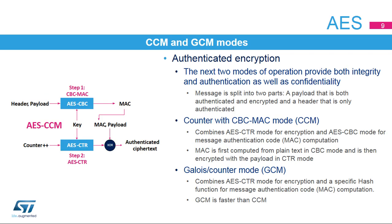Two modes of operation add authentication and integrity to confidentiality. The authentication mechanism is applied on both the payload message that will be encrypted, and also on additional data that requires only authentication. This last part is called the header. The first mode is the counter with CBC message authentication code, or CCM. This mode combines a first pass of AES CBC mode for authentication tag computation, or MAC. The MAC is then encrypted with the payload in a second AES CTR pass.